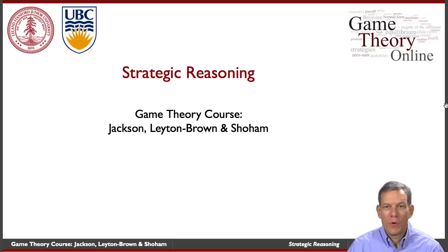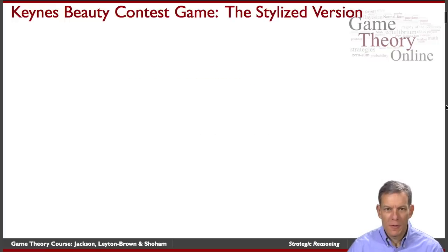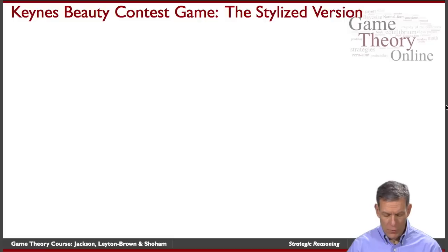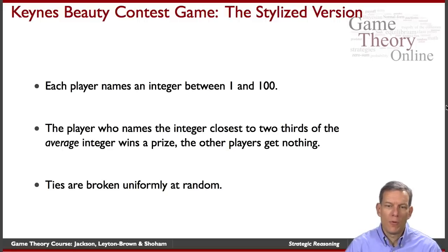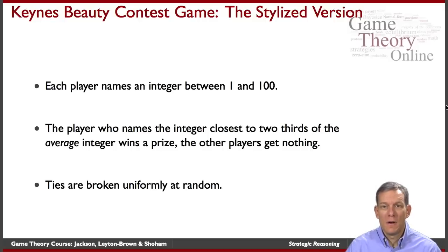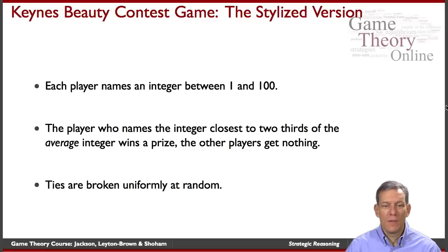It's Matt and now we're talking a little more about strategic reasoning, and in particular, let's go through and analyze the Keynes Beauty Contest game and talk about the Nash equilibria of this game. Each player named an integer between 1 and 100, so you've got a population of players all naming integers. The person who names the integer closest to two-thirds of the average integer named by people wins; other people don't get anything, and ties are broken uniformly at random.